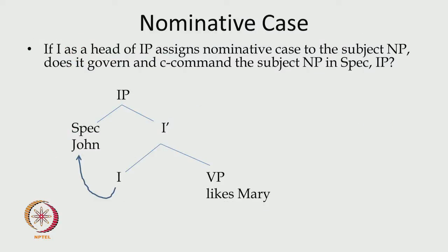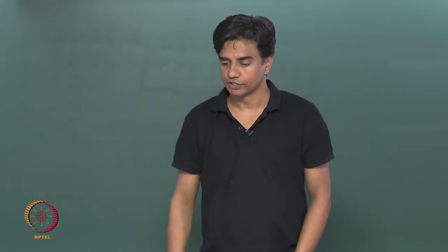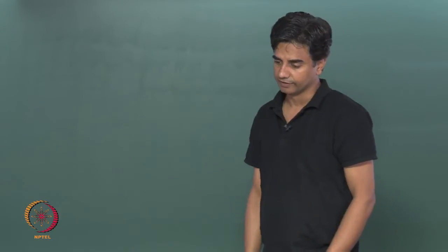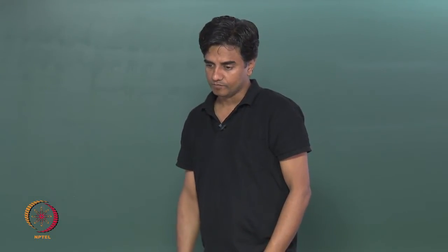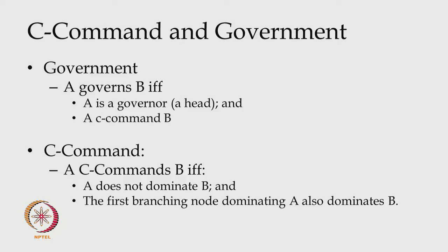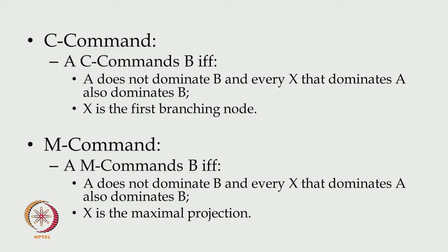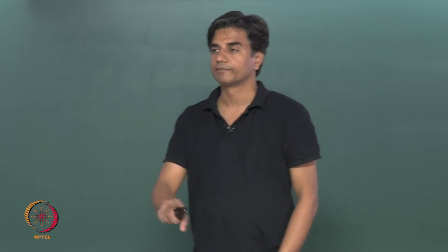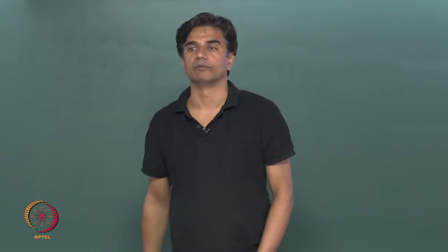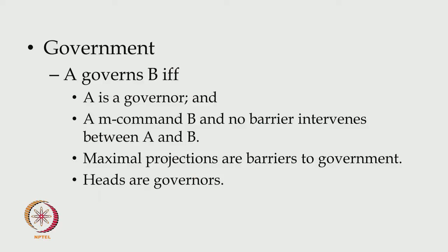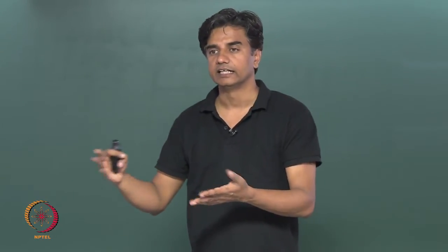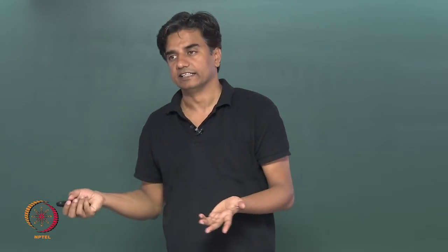We saw that I assigns nominative case to the subject. Government and C-command are responsible for assignment of cases. But the existing definition of C-command was not enough to take care of nominative case assignment, so we talked about M-command. When we look at the difference between C-command and M-command afresh, we need to modify the notion of government. Under this modified notion, both I and V govern the NPs to which they assign cases.